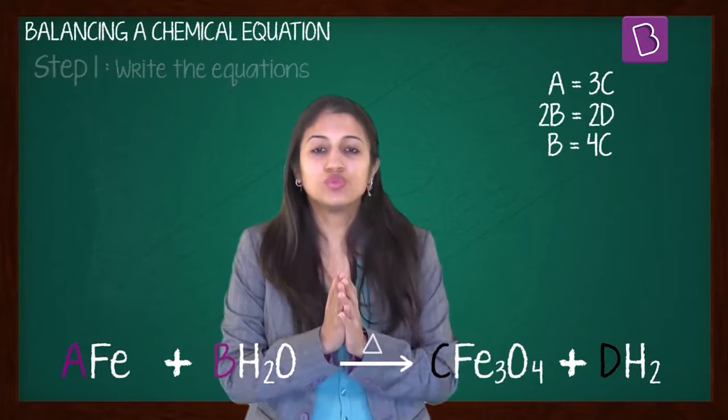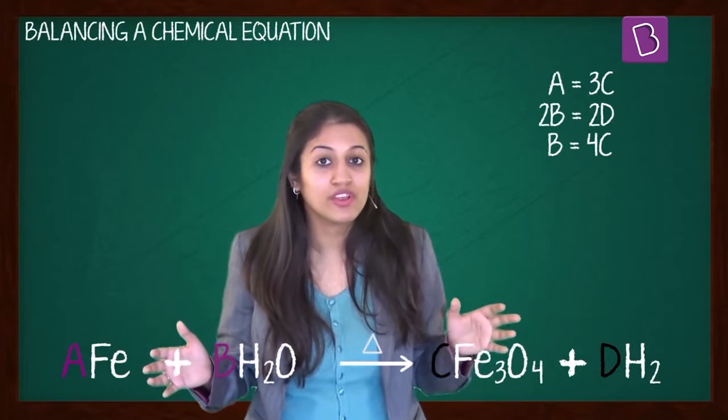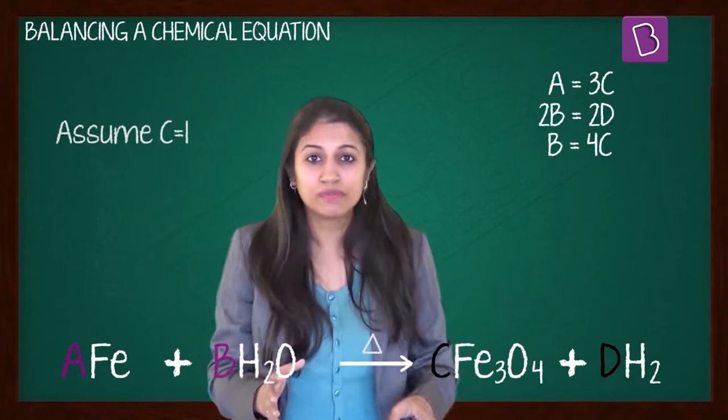Next, let's assume the coefficient of the biggest molecule to be 1. Which is the biggest molecule? Fe3O4. So assume C to be equal to 1. Now it's so simple.